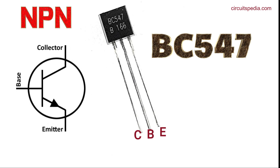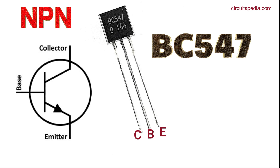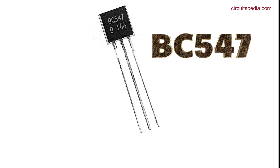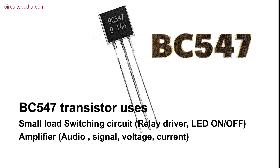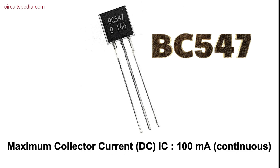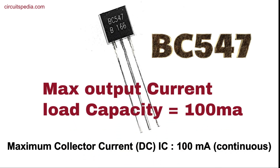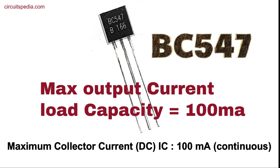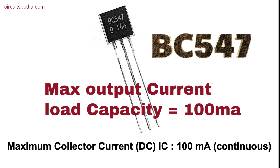Note that transistors with different numbers may have different pin configurations. The BC547 transistor is mainly used as a small load switching circuit and amplifier. Its maximum output load current capacity is 100mA, so it can only be used in circuits with load up to 100mA. It is used for switching circuits such as small relay drivers, turning on and off LEDs, and in amplification circuits for audio amplifiers and signal amplifiers.